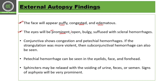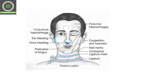The eyes might look bulgy and stuffed, and you can see scleral hemorrhages in the area of the eye. In the conjunctiva, it will show congestion and petechial hemorrhages. If the strangulation was very violent, subconjunctival hemorrhage will also be seen.